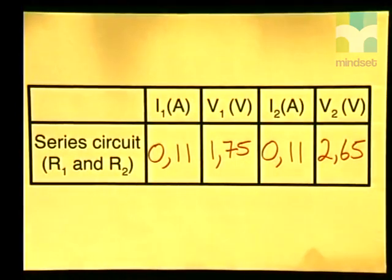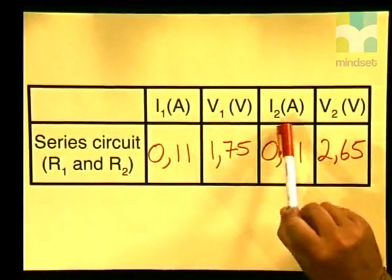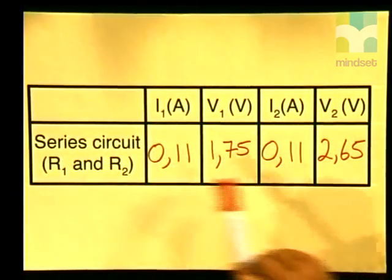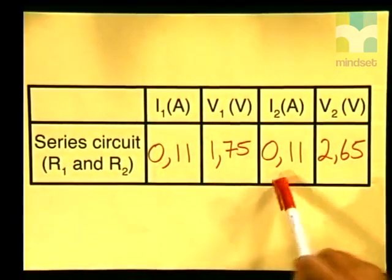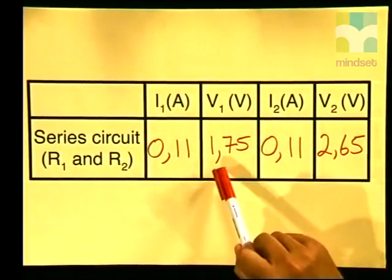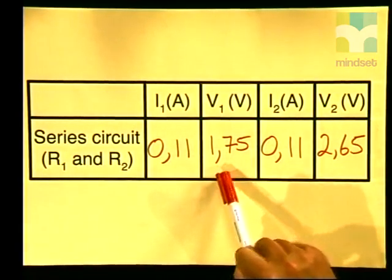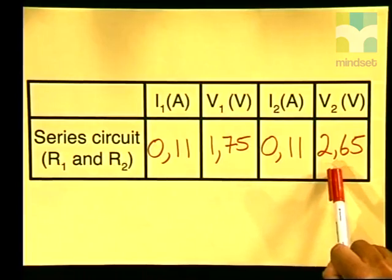Now let's go back to the table and look at our results more carefully. You will notice that the values for I1 and I2 are both exactly the same: 0.11 amperes and 0.11 amperes. We said earlier that current will remain constant in all parts of the electric circuit. However, let's look at the voltmeter readings more carefully — V1 is 1.75 volts and V2 is 2.65 volts. These readings are not the same.